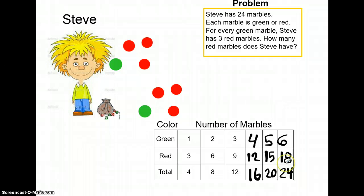Let's re-read our problem to make sure that Steve is doing this correctly. Steve has twenty-four marbles. Do we have twenty-four marbles? Yep, we do, looking at our total. Each marble is green or red. Do we have green and red marbles? Yes, we do. For every green marble, Steve has three red marbles. We see that every green marble he has, he has three red marbles that go with that.